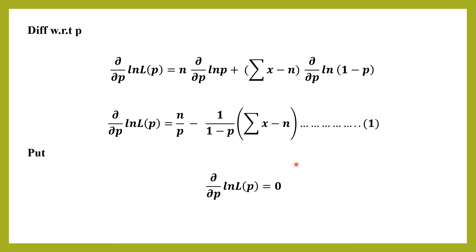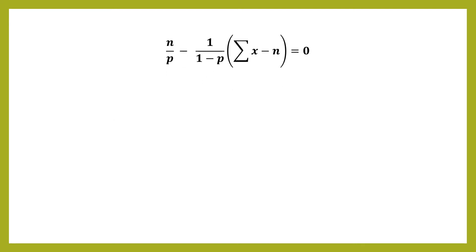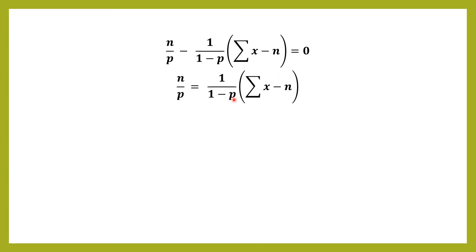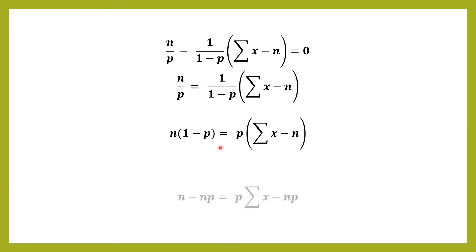Setting the first derivative equal to zero: n/p − (Σx − n)/(1−p) = 0. Shifting the second term to the right-hand side and cross-multiplying, we get n·(1−p) = p·(Σx − n). Expanding and simplifying, n − np = p·Σx − np, so the np terms cancel on both sides.